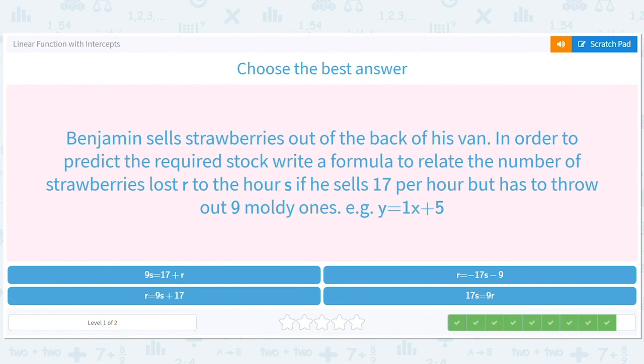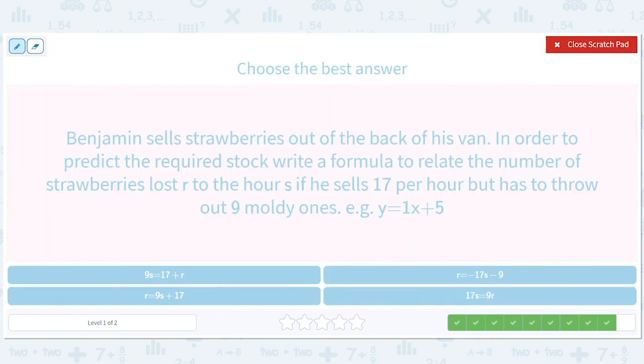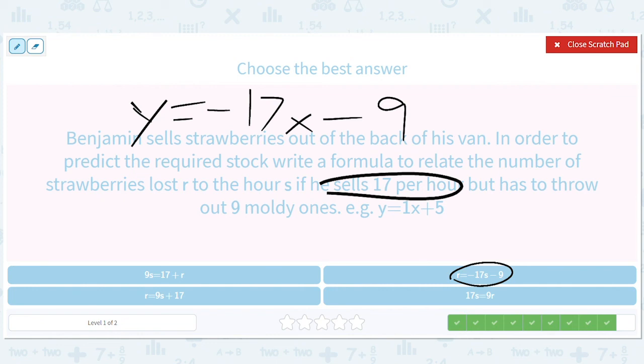Benjamin sells strawberries out of the back of his van. In order to predict the required stock, write a formula to relate the number of strawberries lost R to the hours. If he sells 17 per hour, so he sells, so he's losing. So Y equals negative 17X. And he has to throw out nine moldy ones. So minus nine. So let's just do letter equals negative 17 letter minus nine. So he loses 17 strawberries. It's especially confusing when S is hours, when you have a word strawberries. So R equals negative 17S minus nine.